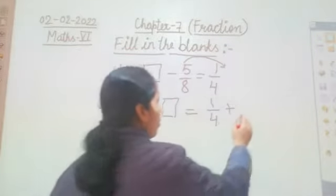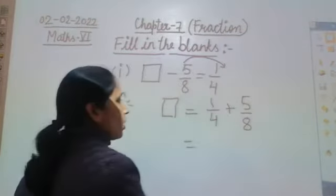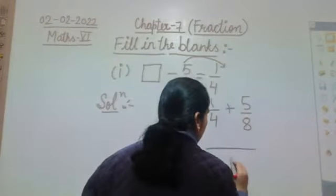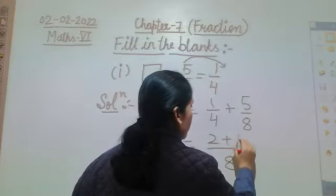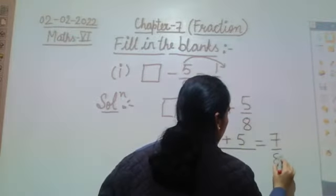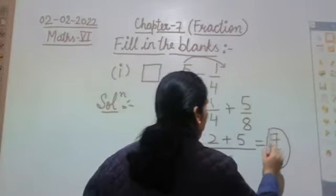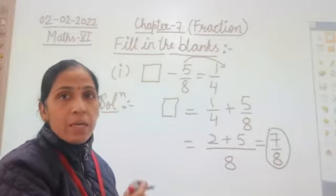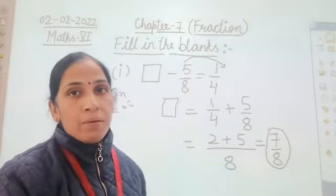Now find the LCM of 4 and 8, which is 8. So 1/4 becomes 2/8, and 2/8 plus 5/8 equals 7/8. So 7/8 goes in the blank. Verify: 7/8 minus 5/8 equals 2/8, which reduces to 1/4. Correct.